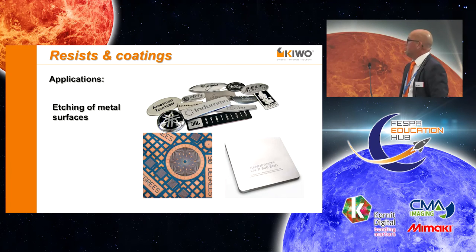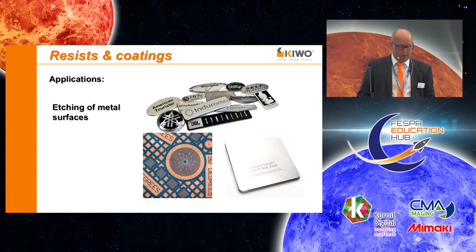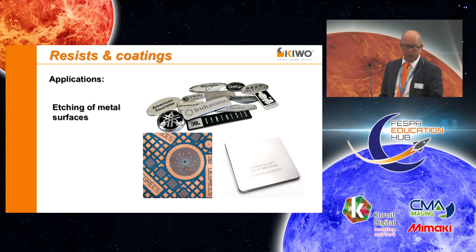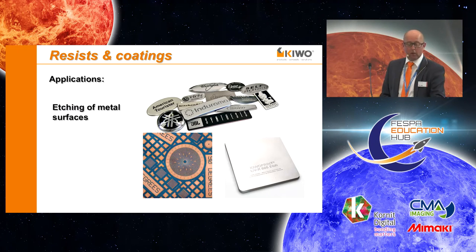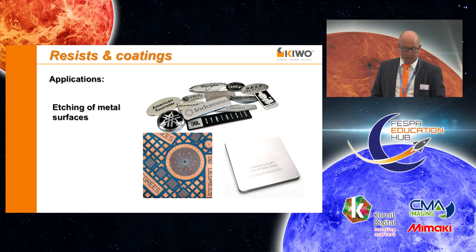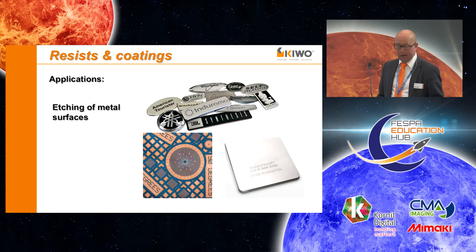The next application is etching of metal surfaces. This is very common in the production of nameplates or in the electronics industry, to produce circuit boards or flexible conductors. The mask can either be printed or imaged by a photoresist.